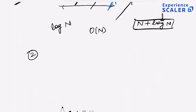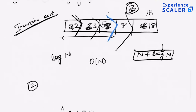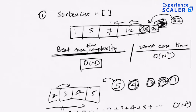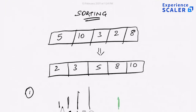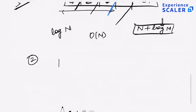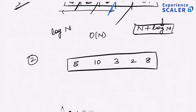The second approach I have: let's say I have an array — the same array — 5, 10, 3, 2, 8. I put this in an array. Now, what I know is that in the sorted array, the smallest number has to come at the beginning of the array.